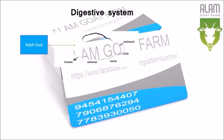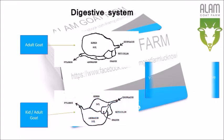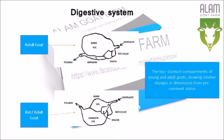The four stomach compartments of young and adult goats, showing relative changes in dimensions from pre-ruminant status.